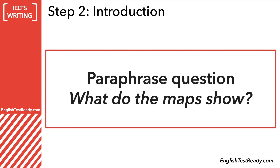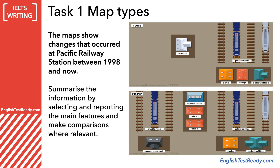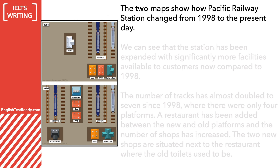So let's start with the introduction. The introduction for this task is actually really simple — you just have to paraphrase the question. Basically, you're looking at the question and answering: what do the maps show? You only have to write one sentence for this. So using this map as an example, the question is: the maps show changes that occurred at Pacific Railway Station between 1998 and now. And here's my example: The two maps show how Pacific Railway Station changed from 1998 to the present day. You just have to reword the question but include the same main information — the name of the railway station and the dates included in the maps.